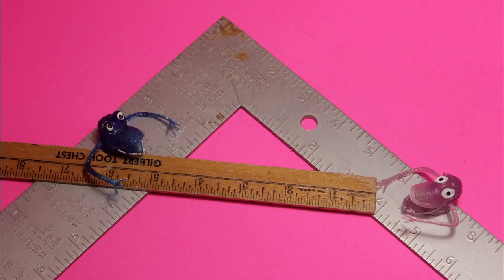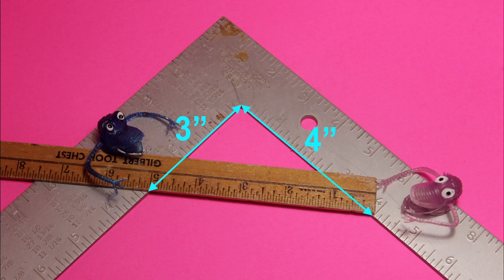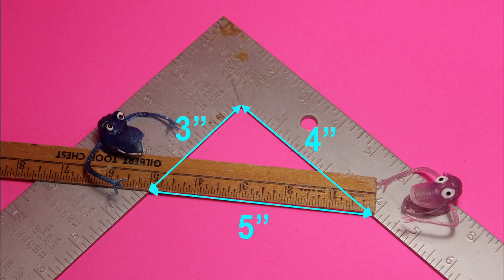That means if you measure the A side out 3 units and then 4 units on the B side, then if you connect it should be 5 units. And I say units because you can do 3 inches to 4 inches and across it'll be 5 inches. 3 feet and then 4 feet and across it'll be 5 feet. There's so many different ways that you can use it.